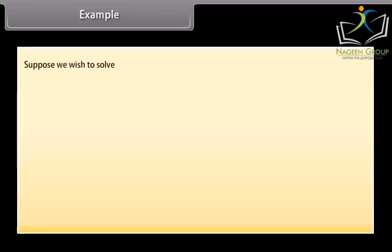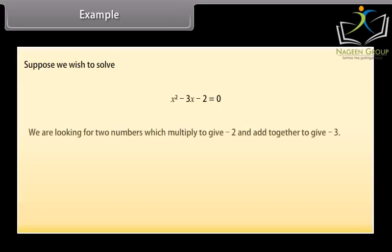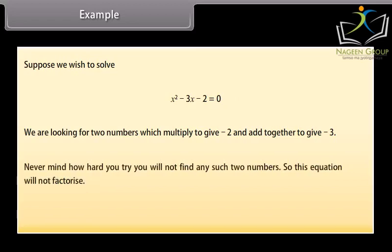Now suppose we wish to solve x² − 3x − 2 = 0. We are looking for two numbers which multiply to give −2 and add together to give −3. No matter how hard you try, you will not find any such two numbers, so this equation will not factorize. For this we need another approach, which we will learn in the next screen.